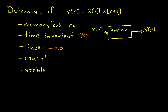For this system to be causal, the output at time n needs to depend on the input at time n and at previous times. But the output at time n depends on the input at n plus 1, which is in the future. So this is a non-causal system — in order to give the output at time n, it has to look into the future to time n plus 1.